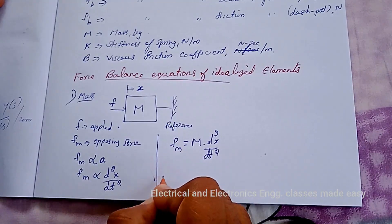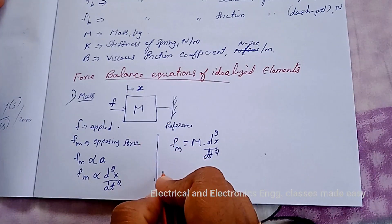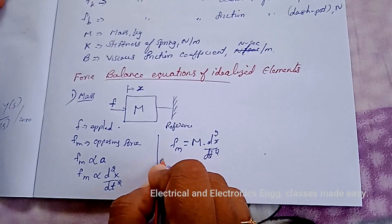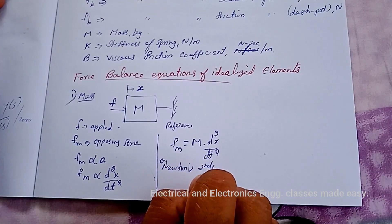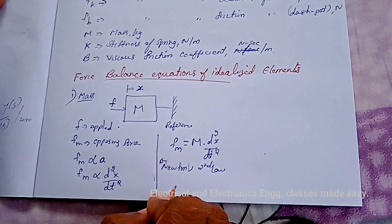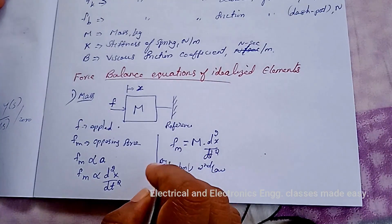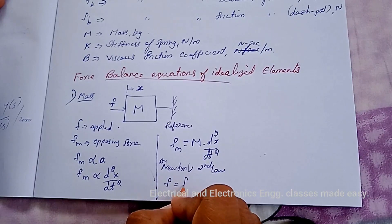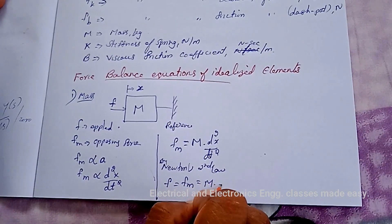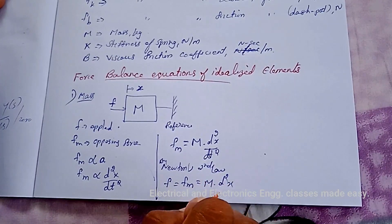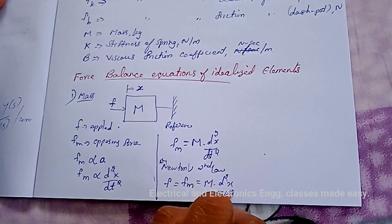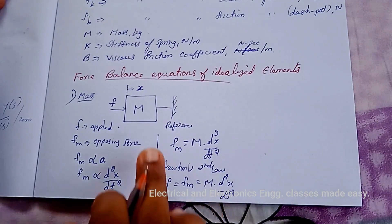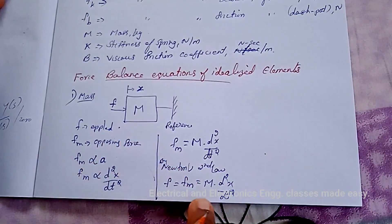By Newton's second law, the applied force is equal to the opposing force: F = Fm = m·d²x/dt². This is the force balance equation of the ideal mass element.